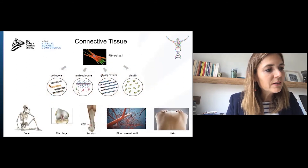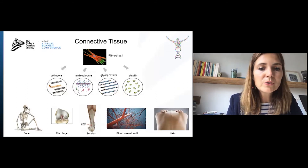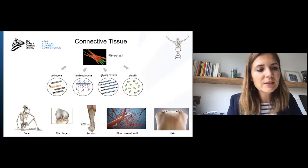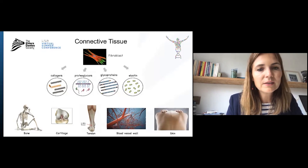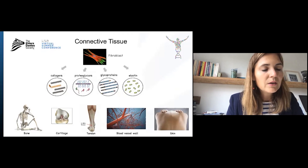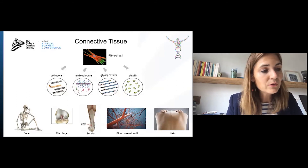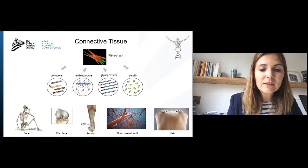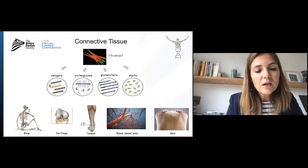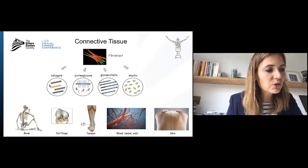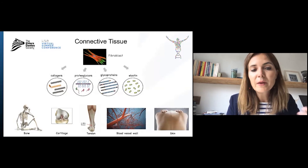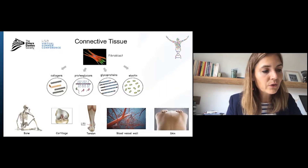The proteins that are important for the structure and function of our connective tissue, such as the collagens, but also molecules such as proteoglycans, glycoproteins, and elastin, are made by specialized cells present in the connective tissue — the fibroblasts. We can find these fibroblasts in different connective tissues such as skin, the wall of blood vessels, tendons, and ligaments. There are also specialized cells in bone called osteoblasts and osteocytes, and in cartilage called chondroblasts and chondrocytes, that make collagens and other connective tissue proteins.